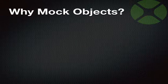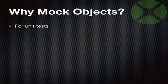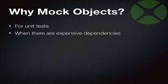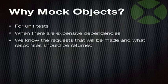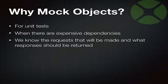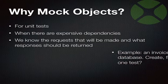Why exactly do we find ourselves needing mock objects for unit tests? What often happens in a unit test is that I am trying to test an object which has expensive dependencies. The classical case is a database. I'm going to be able to use a mock object if I know the requests that will be made to that object and what responses should be returned — it is not the object being tested, but it is an object that the object being tested needs.